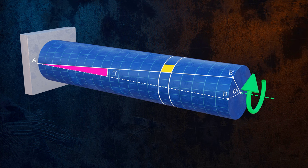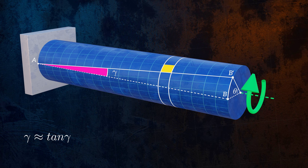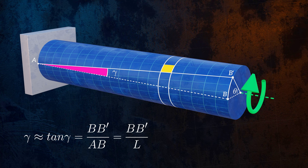gamma will be approximately equal to the tangent of gamma, which makes it equal to the length BB prime, divided by the length AB. AB is the length L of the bar.